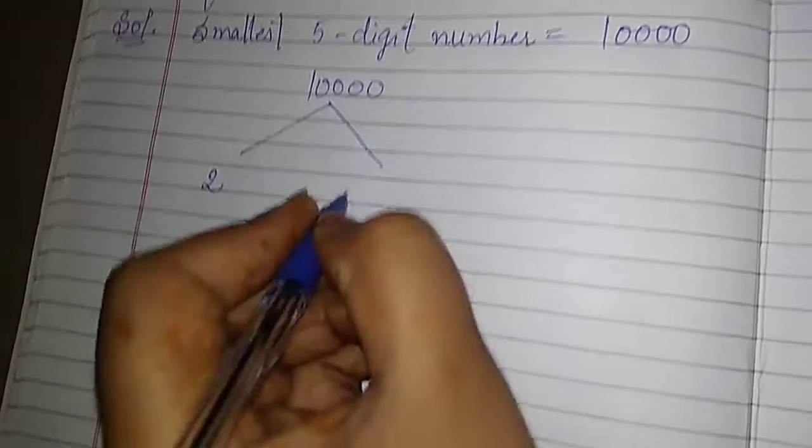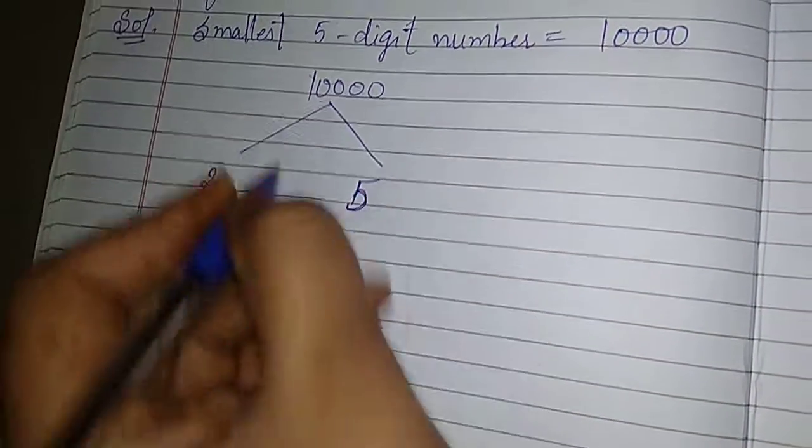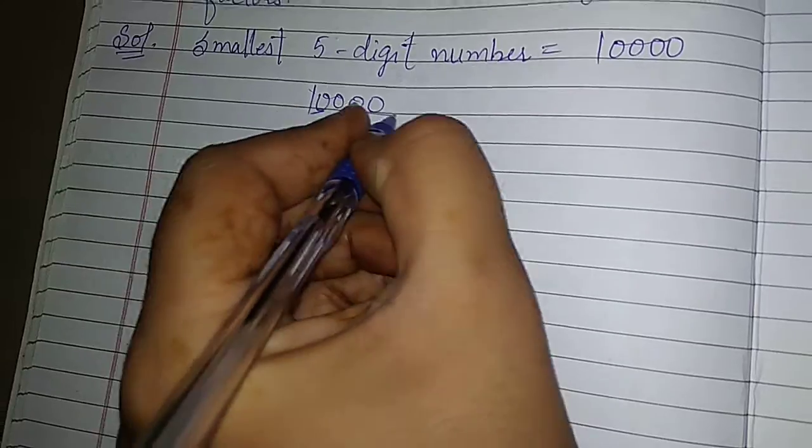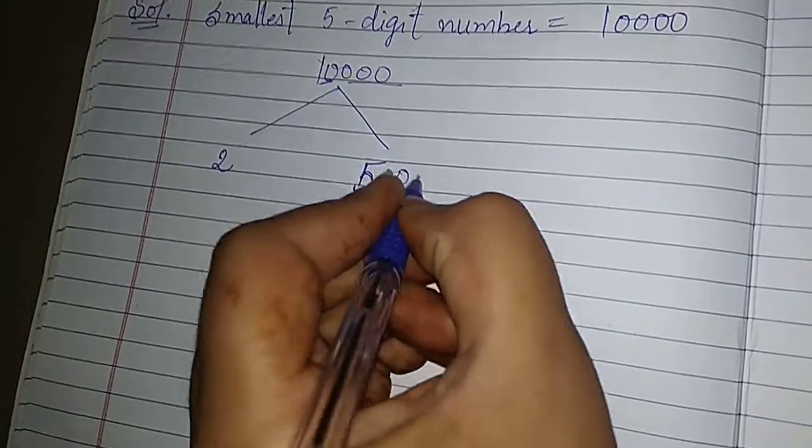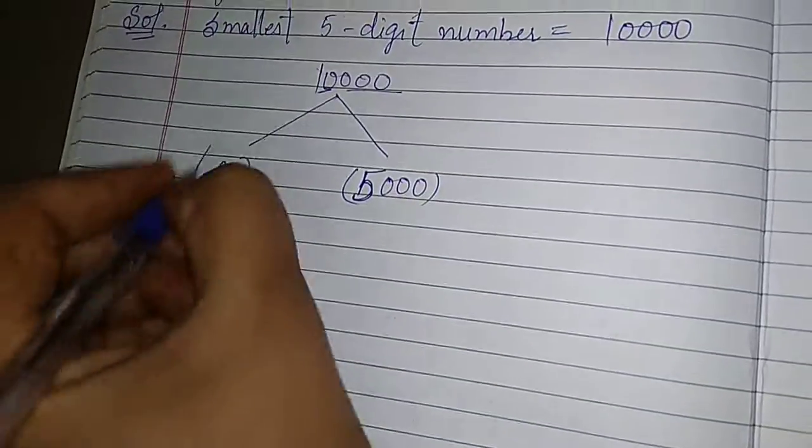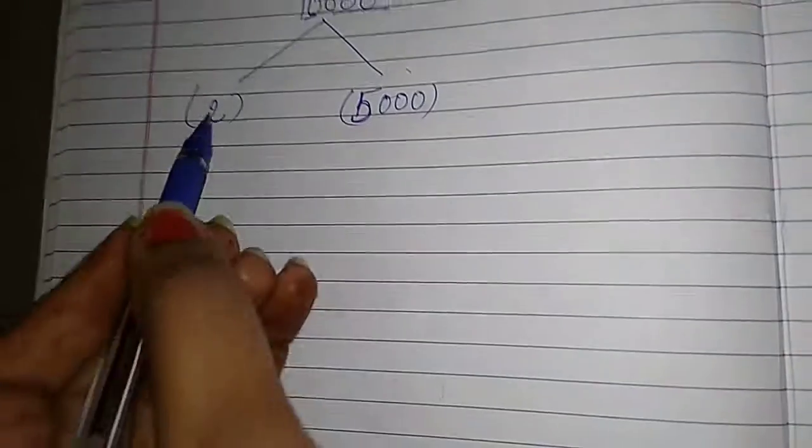2 times 5 is 10. Then 2 times 5 is 10. Then remaining 3 zeros along with this. Next, 2 is a prime.